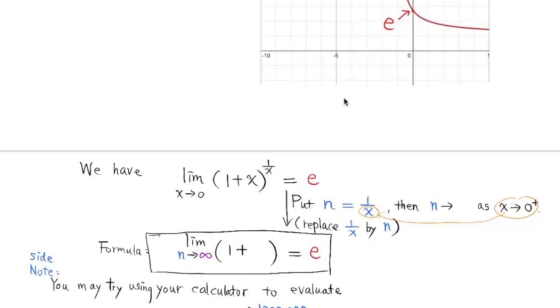Now this limit here is equal to this limit. If we replace this 1 over x by n, since n and x are reciprocals of each other, we can replace x by 1 over n. Now as x approaches 0 from the positive side, what happens to n? As x approaches 0 from the positive side, the reciprocal is getting bigger and bigger and going to positive infinity.